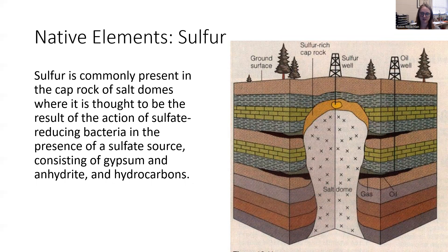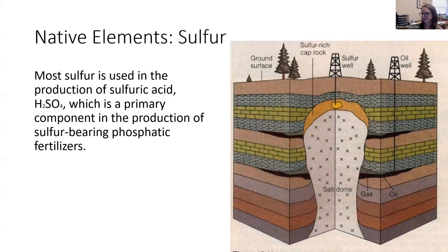The same sulfate-reducing bacteria happening at the top of salt domes — reducing sulfate in sulfide minerals and causing sulfur to deposit — is also why water in places like Brunswick smells like rotten eggs. Most sulfur is used in the production of sulfuric acid, which is really important in fertilizers. So sulfur smells like rotten eggs, but it's of great economic importance — you can thank sulfur for your nutritious food.